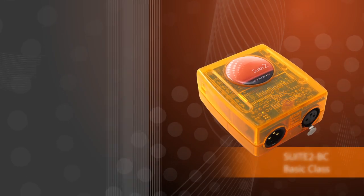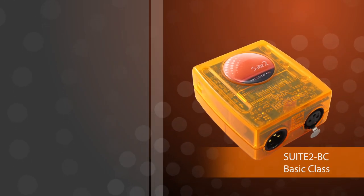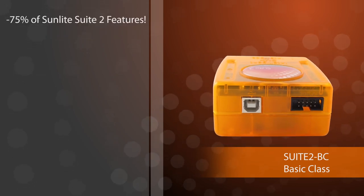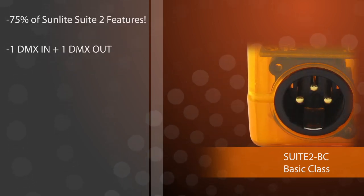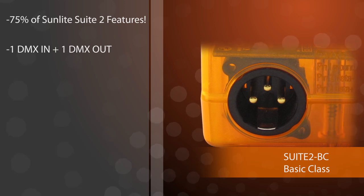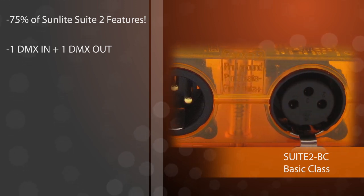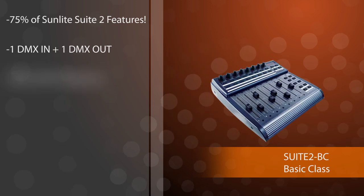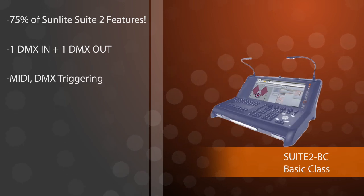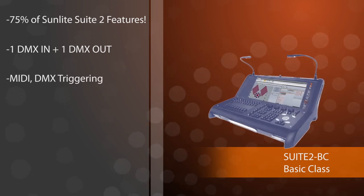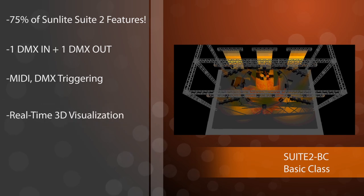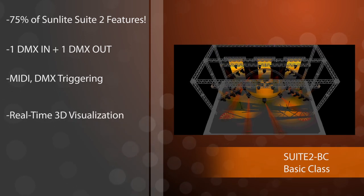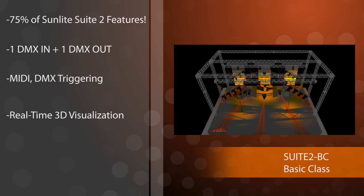The Suite 2 Basic class is our starter product. However, it still allows you to use 75% of the features in Sunlite Suite 2. It features one DMX input universe and one DMX output universe, and allows you to control your lighting with a MIDI controller and a DMX controller. You can view your light programming in real time using the 3D visualizer.